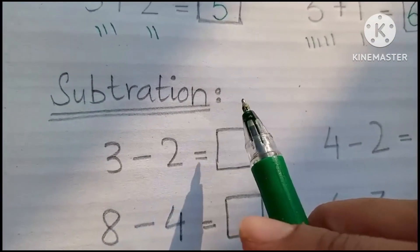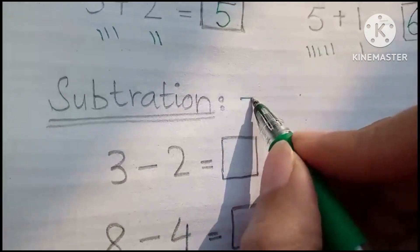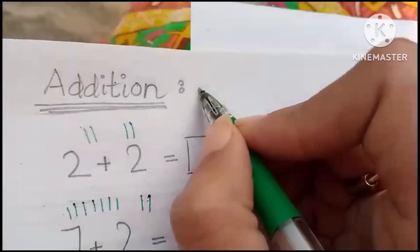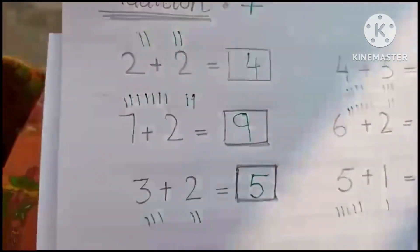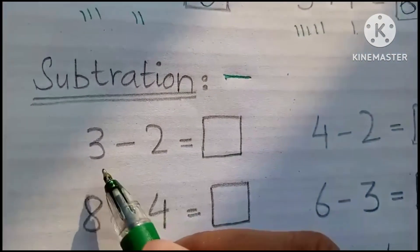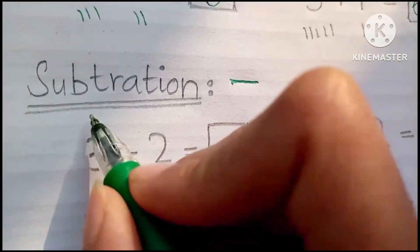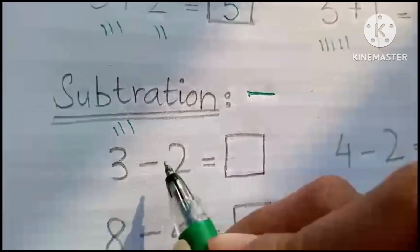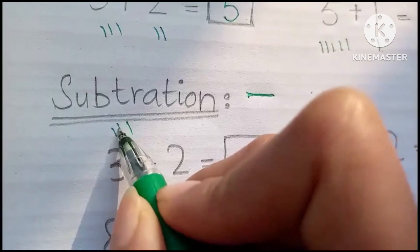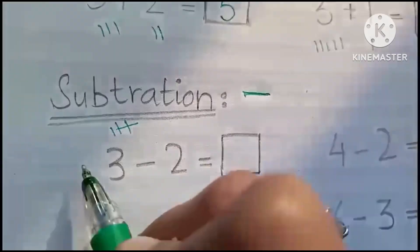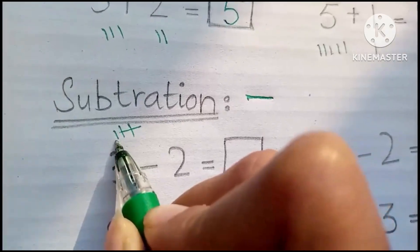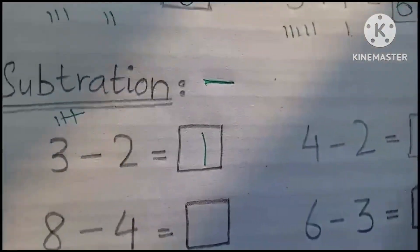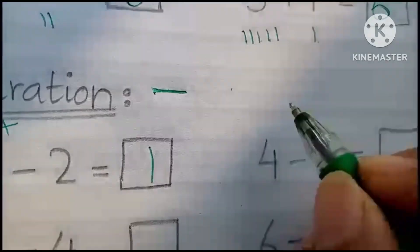Subtraction. The sign of subtraction is minus. Now 3 minus 2 — 1, 2, 3 — these are 3 lines. Now minus 2. So how many are left? Only one is left. So 3 minus 2 is 1. Then 4 minus...